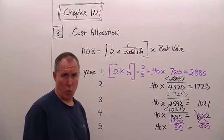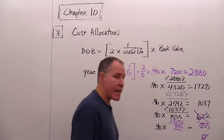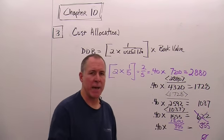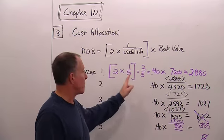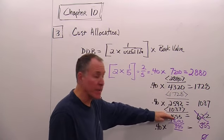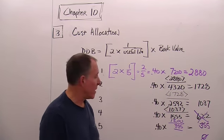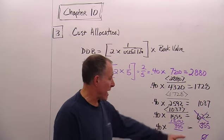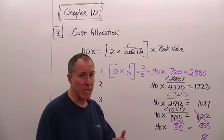So the depreciation in year four is $355. In year five, we can't take any depreciation at all because we've already depreciated down to the salvage value. The key to double declining balance: use two times the straight line rate (one over the useful life), which is two-fifths or 40%, applied to the declining book value each year. Even though salvage isn't used in the calculation, you cannot go below the salvage value. It's an accelerated method — more depreciation in earlier years, less in later years.